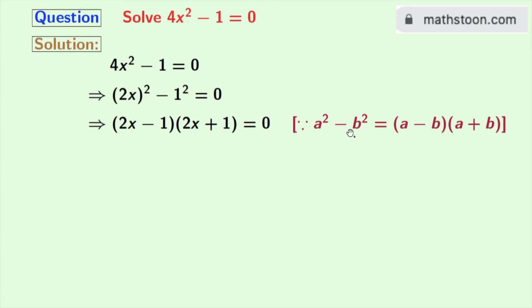Applying this formula, we get (2x)² - 1² = (2x - 1)(2x + 1) = 0.